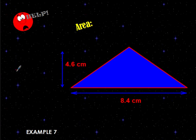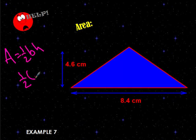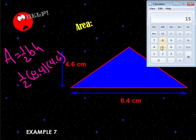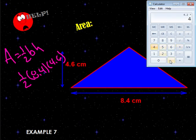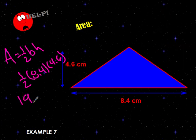We're going to find the area of this one. Area equals half base times height. The base is 8.4 and the height is 4.6. If we don't know what half of 8.4 is, we can go 0.5 times 8.4, which equals 4.2. Then 4.2 times 4.6 equals 19.32 centimeters squared.